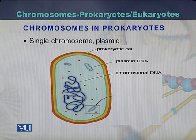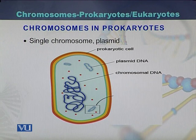There is no clear nucleus in prokaryotic cells. The region where the chromosome is present is usually called the nucleoid region.